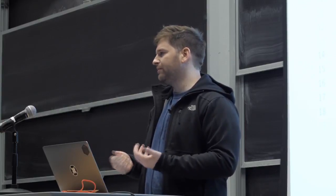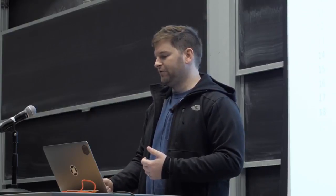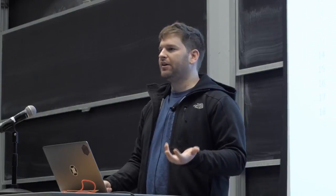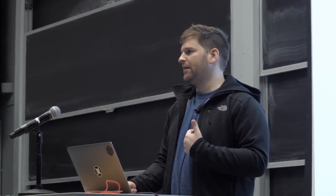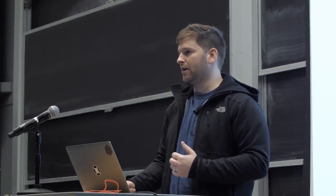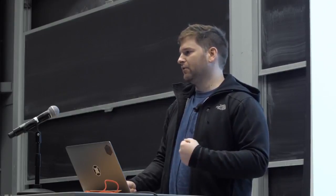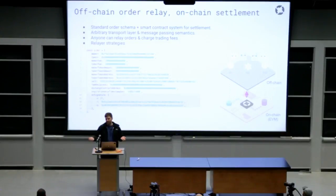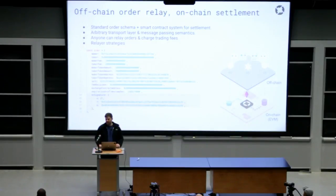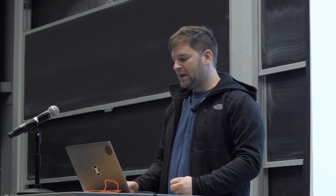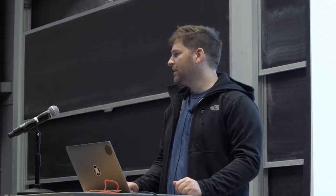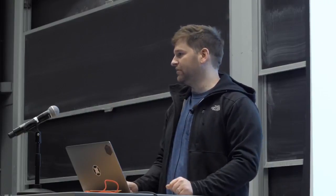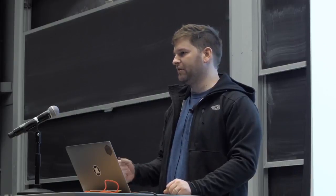A second way that 0x protocol can be used is what we call an order matching strategy. A relayer will only accept orders onto their order book if they are specified as the only entity able to inject that order into the 0x smart contract. The matcher waits until they get an order on either side of a market at the same exchange rate or overlapping in price, then packages those two orders together, batch fills them synchronously and atomically in a single transaction using the 0x smart contracts — preventing things like front running and trade collisions. We intentionally do not specify a best way of using 0x, and we encourage people in our ecosystem to experiment with their own approaches.